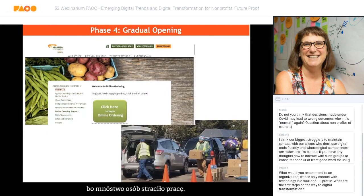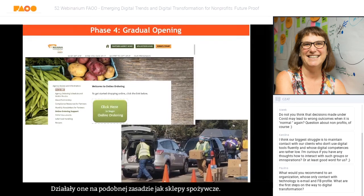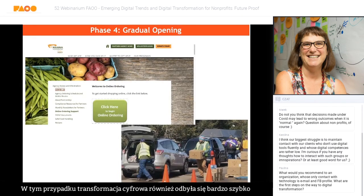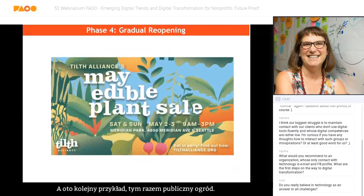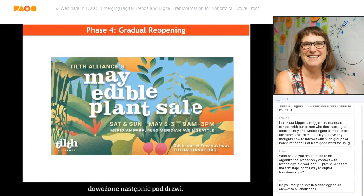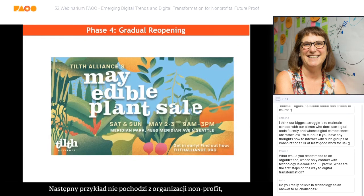Food banks, facing a surge in demand as many people have been laid off, traditionally let people come into the facility like a grocery store, but given the lockdown they had to shift to online ordering and curbside pickup — implementing an online ordering system very quickly. Another example is a public garden that every year holds a benefit plant sale, which was pivoted to an online virtual plant sale with an online store, digital ordering, and curbside pickup with masked and gloved volunteers handing over plants.